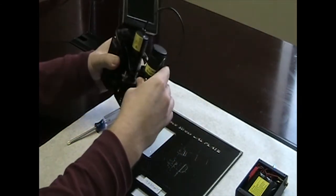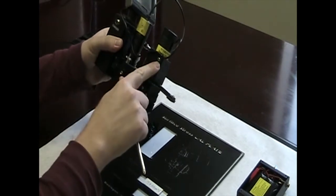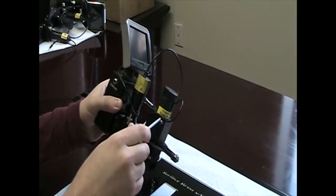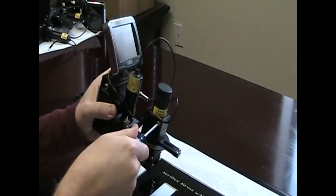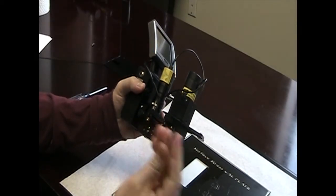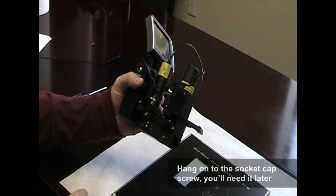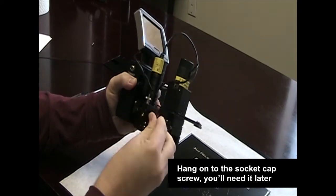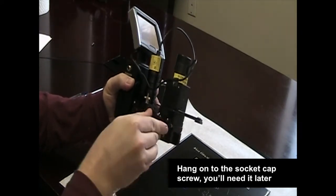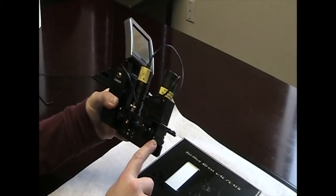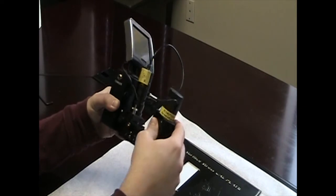The first step is to remove this screw right here using your Phillips head screwdriver. The screw is removed. Our next step is to take the allen wrench provided and remove this socket cap screw right here.